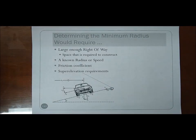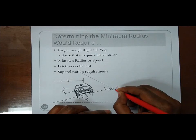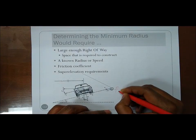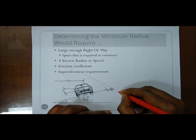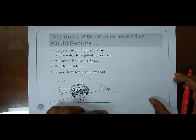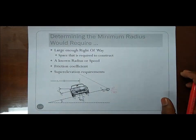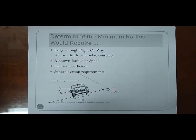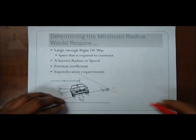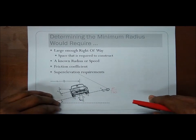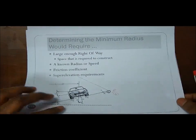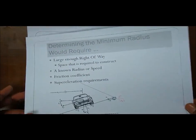Let's talk about superelevation quickly — that is the small letter e. Notice that it is e divided by 100, which means the percent given to you should be used as a decimal percentage in the formula later on.